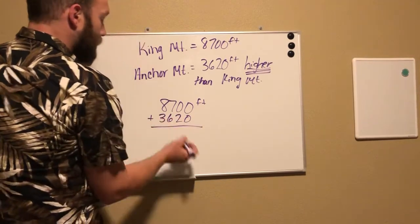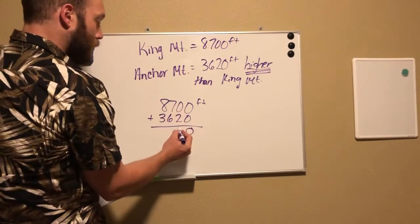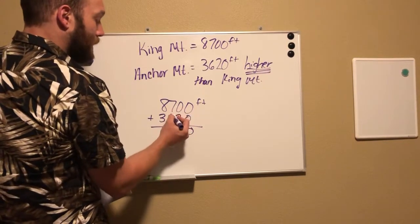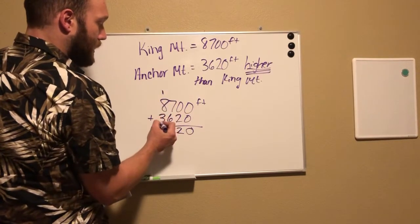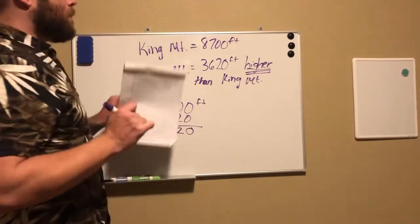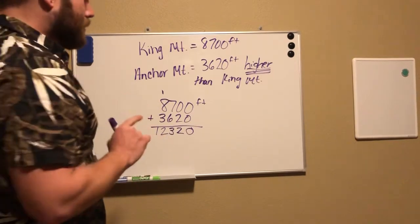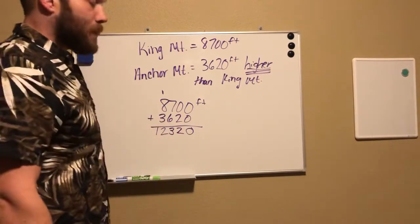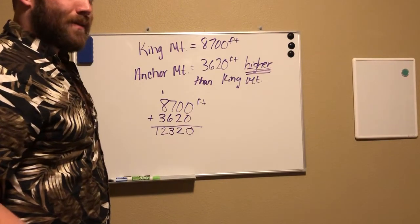We all know what zero plus zero is, right? Zero. And zero plus two is two. Seven plus six is thirteen, carry the one. Eight, nine, ten, eleven, twelve. So now you need to make this a complete sentence or a complete answer. You can't just say twelve thousand three hundred twenty - twelve thousand three hundred twenty what? Feet.